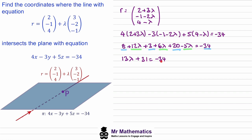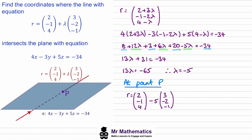Moving 31 to the right-hand side and dividing both sides by 13, λ equals negative 5. Substituting this back into the line equation gives our specific x, y, and z values: x = 2 minus 15, y = negative 1 plus 10, and z = 4 plus 5. So the point of intersection has coordinates negative 13, 9, and 9.